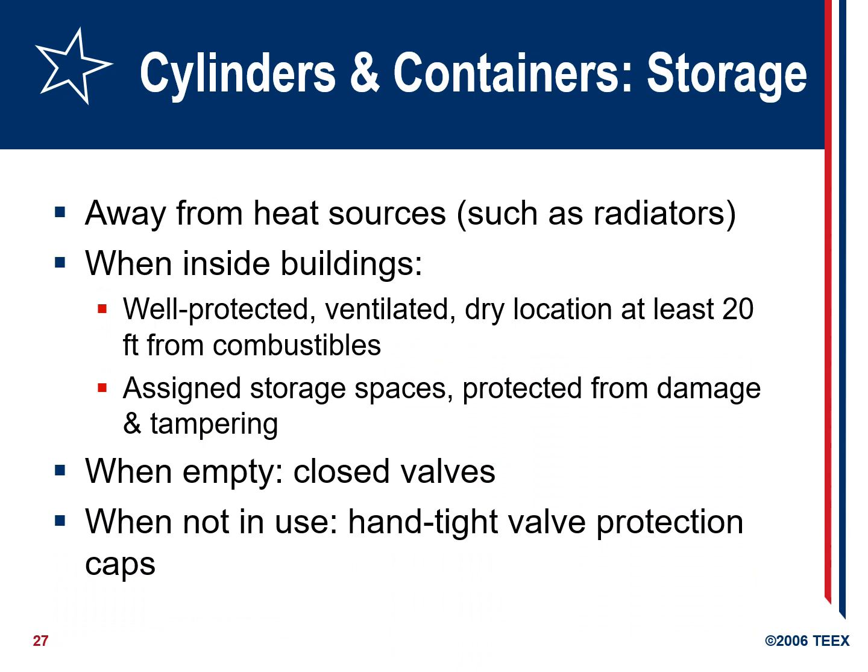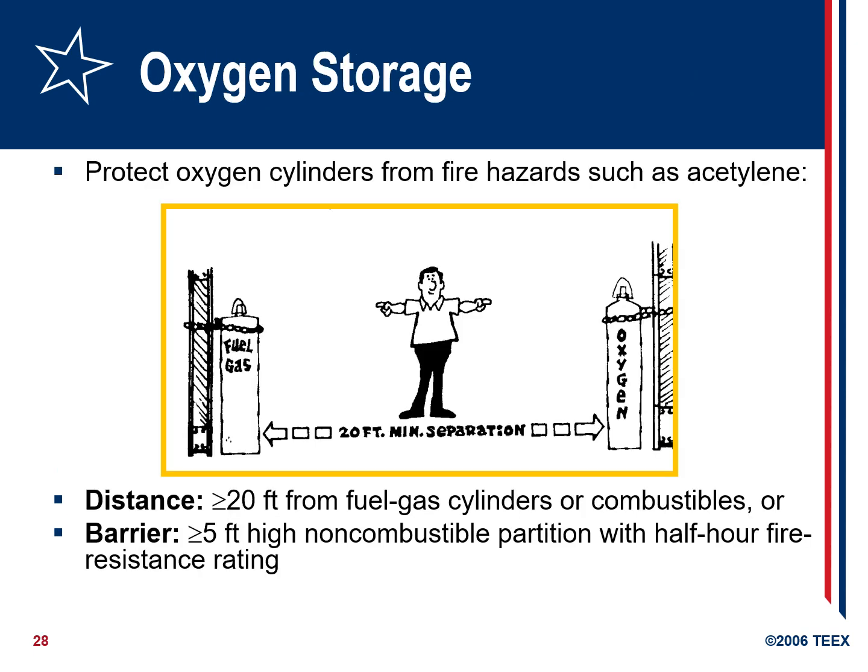Cylinders and containers must comply with DOT markings and requirements. Wall protections must be maintained away from heat sources. All cylinders and containers must be stored away from heat sources such as radiators. When stored inside buildings, they must be well protected, ventilated, dry, and at least 20 feet from combustible materials. When not in use, hand-tight valve protection caps must be used. The distance between fuel gas and oxygen cylinders must be a minimum of 20 feet, or separated by a barrier at least five feet high with a non-combustible partition rated at half-hour fire resistance.